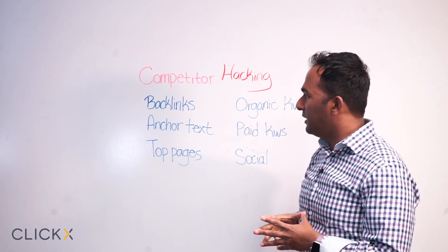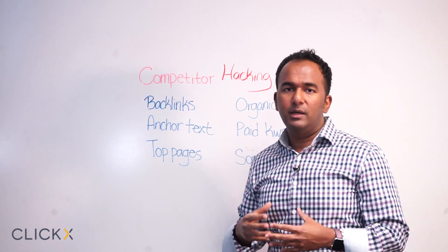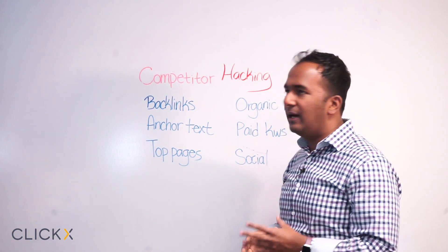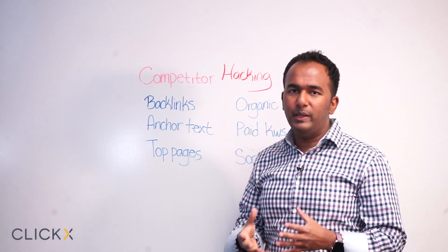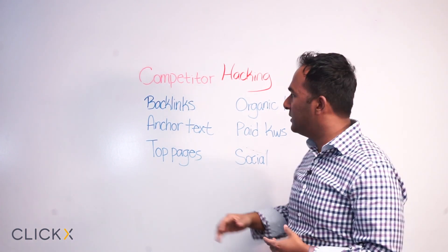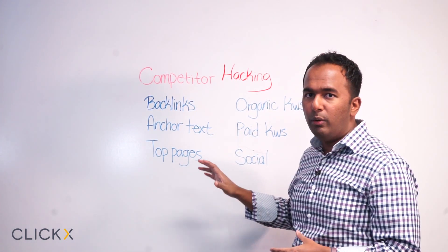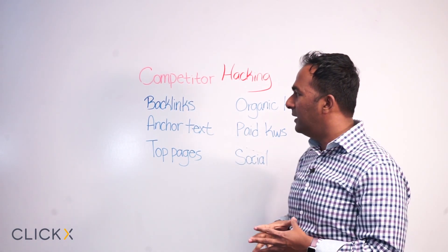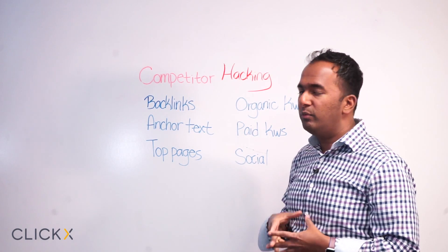Now let's get to the technical part. I'm talking about looking at a competitor from a technical perspective — not the messaging, not the strategy, not the copy or the layout, but what are the things helping them grow their organic presence and their paid media. These are things we track in our platform. When you add a competitor in ClickX, you punch in their URL and immediately you start to see this information populate.